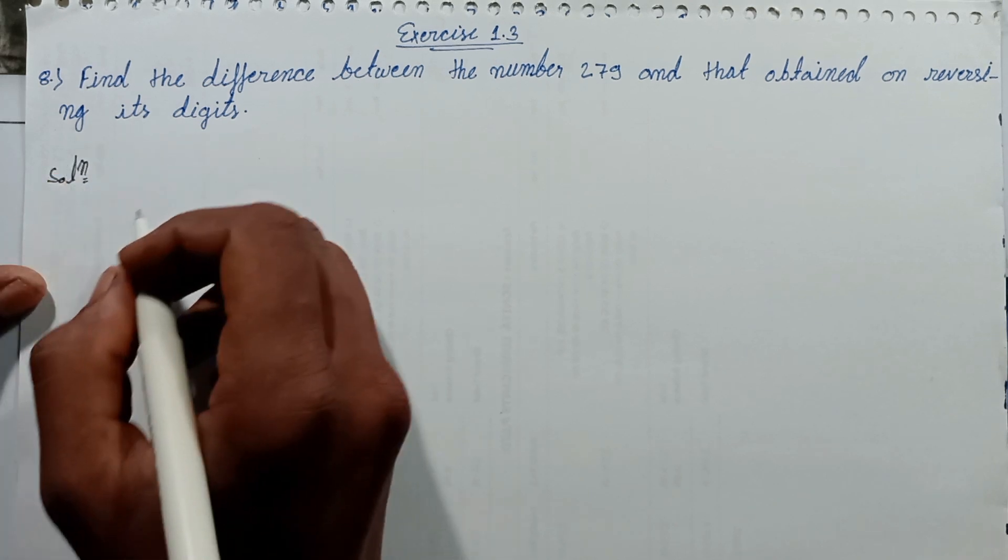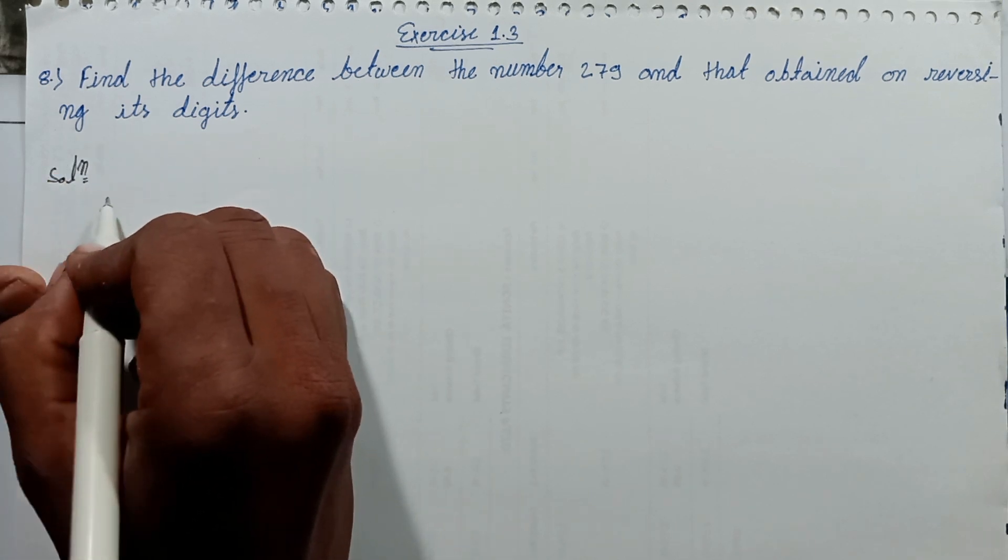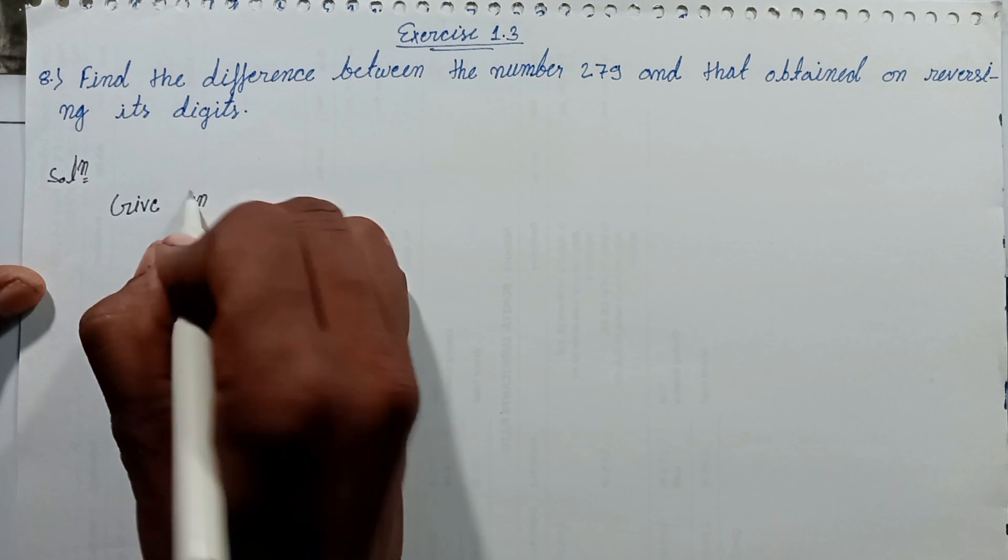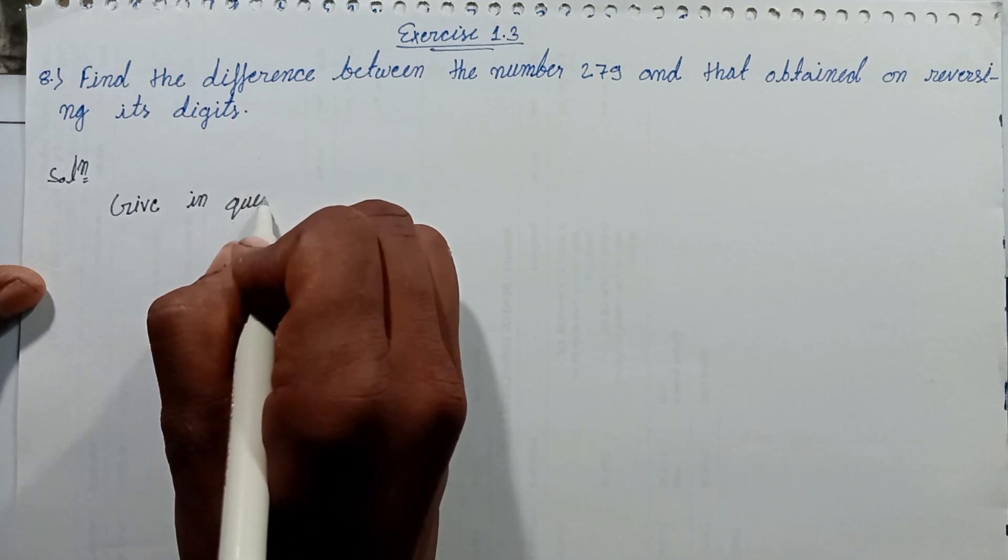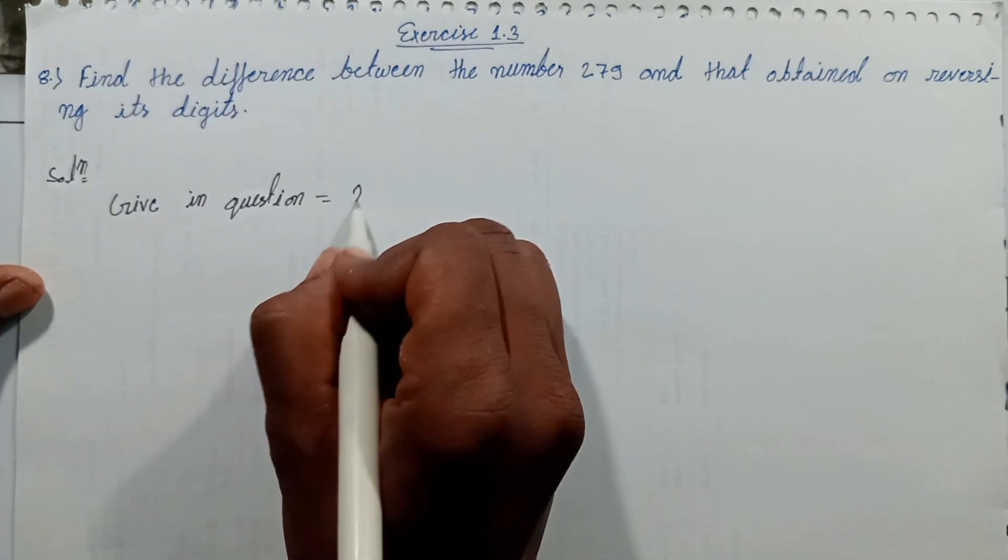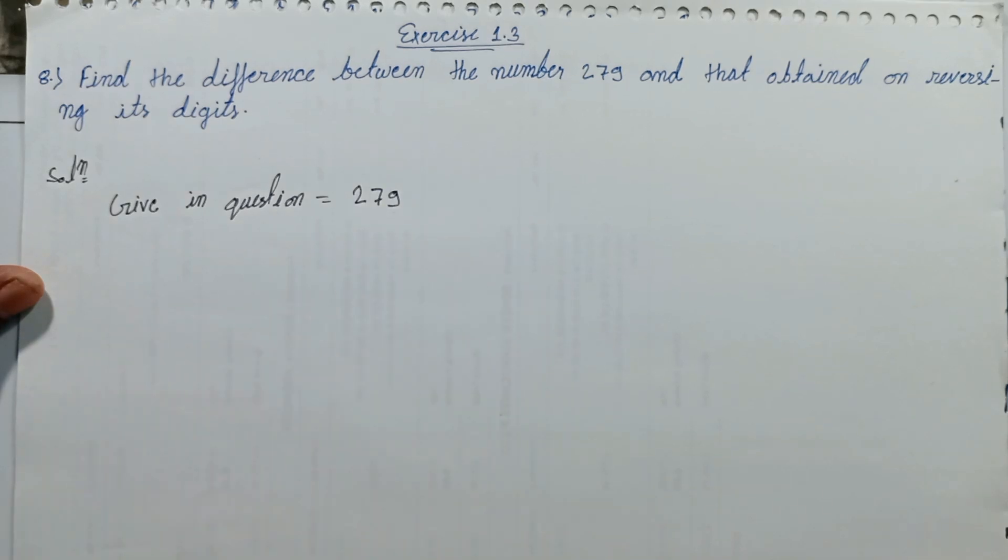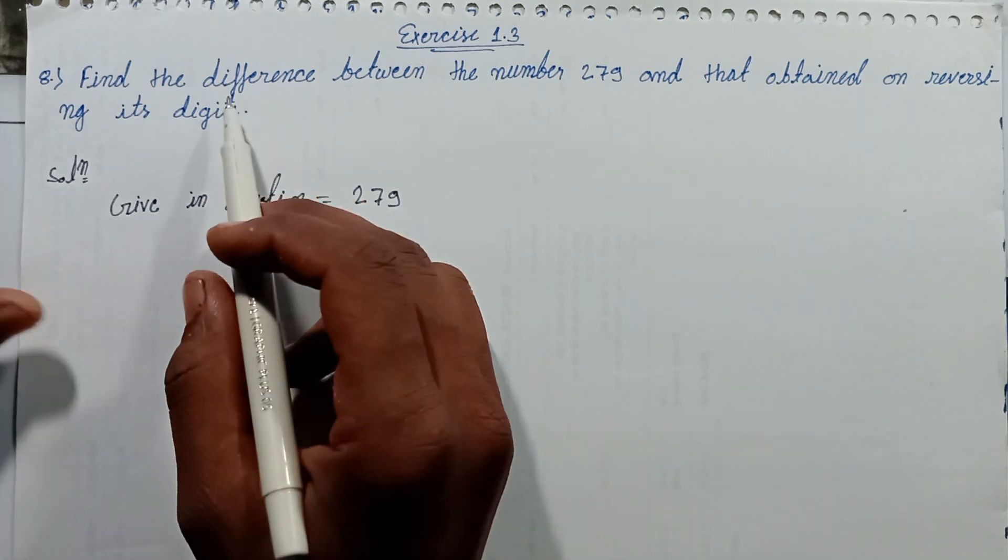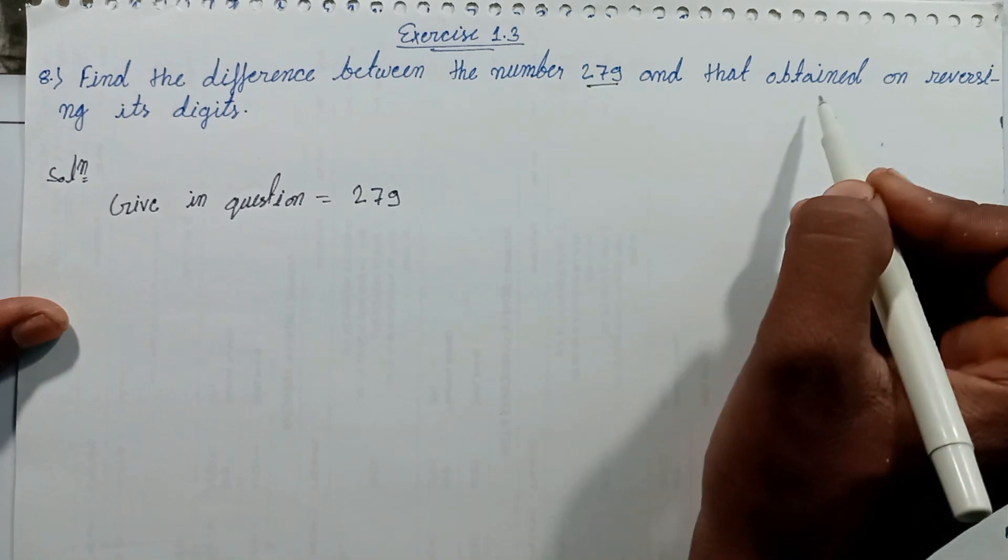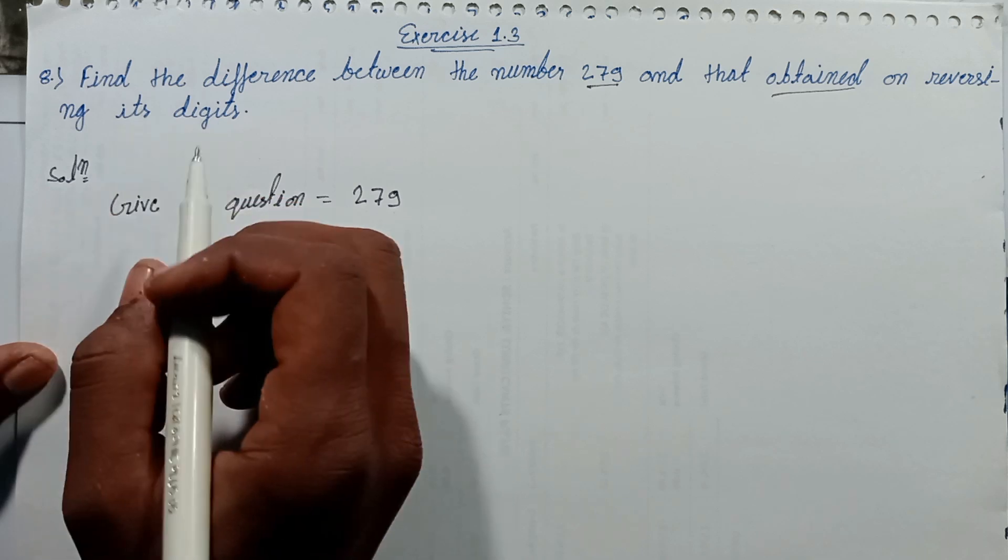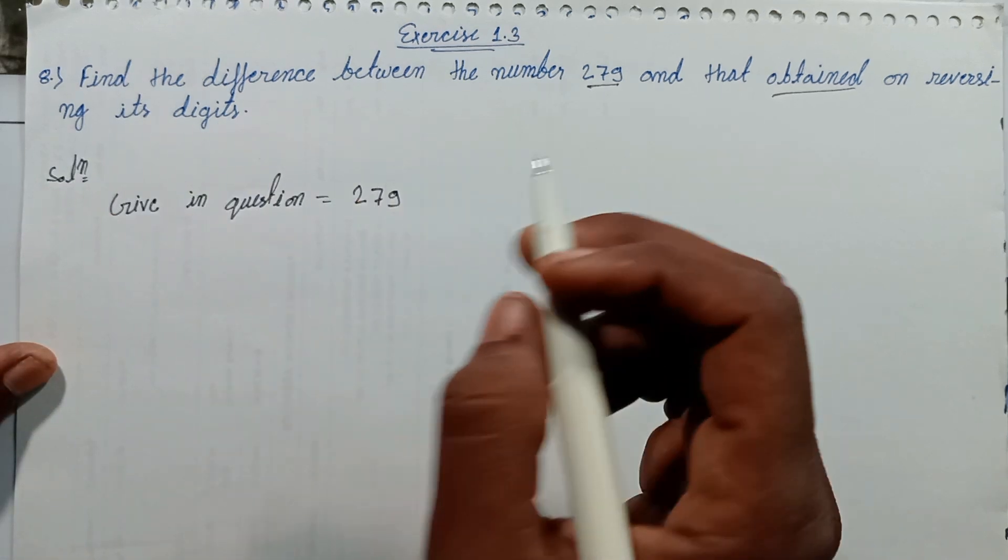Solution. Given in question: 279. This number is given in question. Find the difference between the number and that obtained in reversing its digit. Write this number in reverse order.